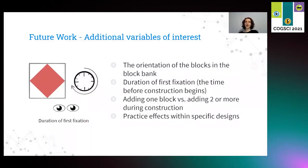In addition to the variables identified in the literature, our paper identifies several variables for future work. The first is the orientation of blocks in the block bank — whether a person picks up blocks in the orientation they are looking for or rotates them on the way to the construction area. The second is the duration of first fixation, or the time before construction begins. The third is adding one block versus multiple to the construction area. The fourth is practice effects within specific designs — whether a participant is faster placing blocks in the second half of a design versus the first half, having learned how to place certain graphical objects.